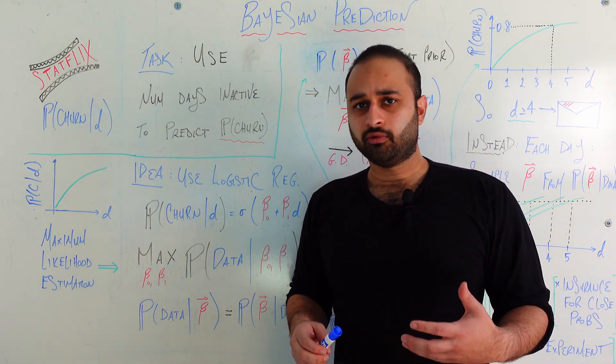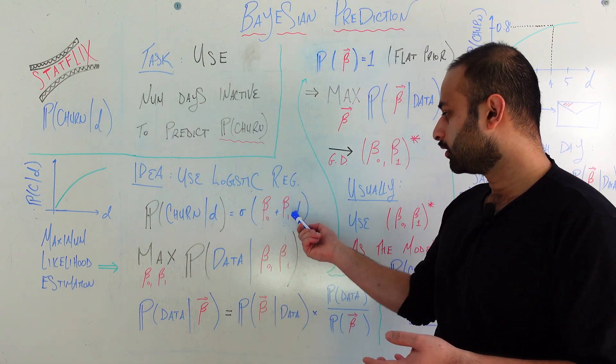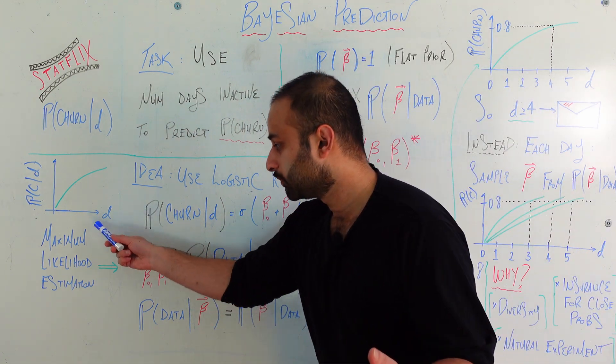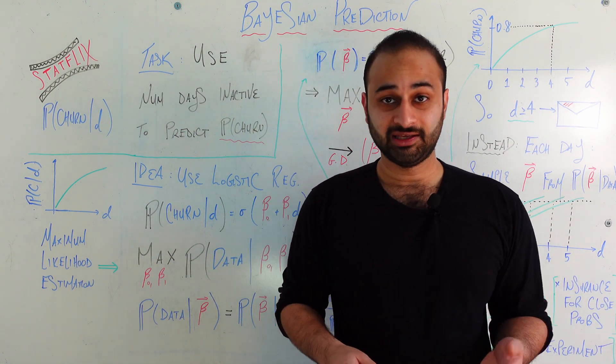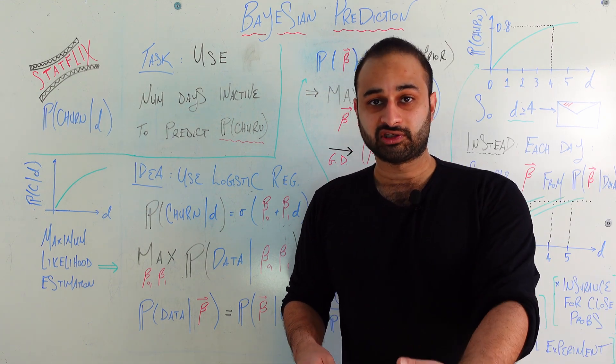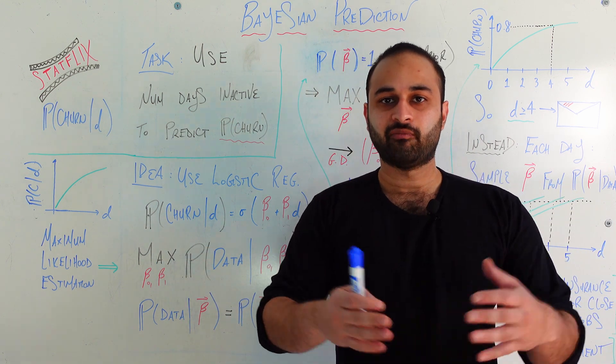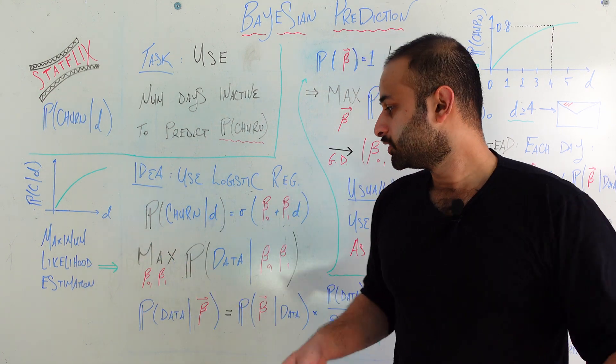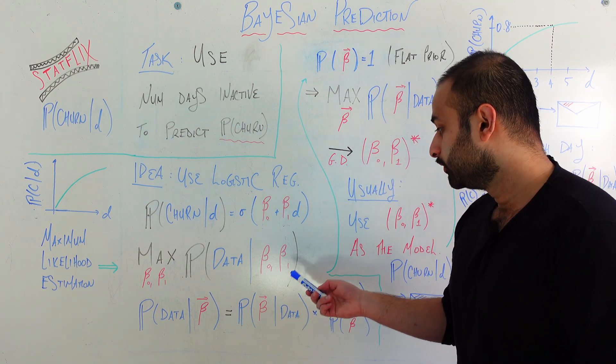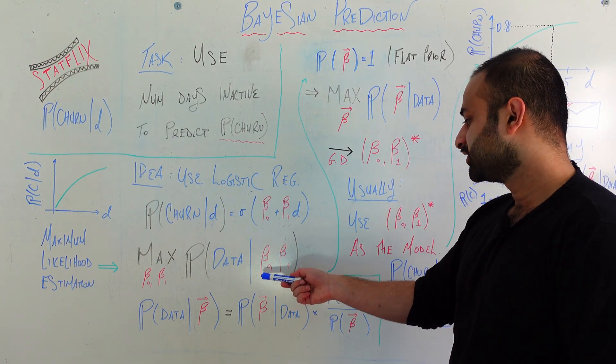Let's keep things simple in this video and say we're going to try and model this probability using a logistic regression. And so what that means is that we're going to model probability of churning given the number of days of inactivity as some sigmoid of this linear combination. And of course the only question now is what is the right setting for beta naught and beta one?